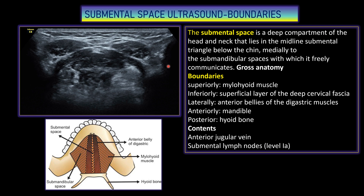Coming to the submental space ultrasound, the submental space lies in the deep compartment of the head and neck, in the midline below the chin. Superiorly it is bounded by the mylohyoid muscle.